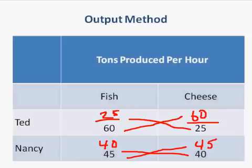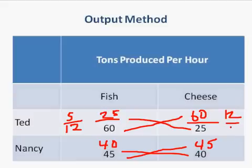What we're looking to do is find the opportunity cost. Once you get the numbers, we would want to simplify. 5 goes into 25 five times and 5 goes into 60 twelve times, so it's 5/12ths. This would be 12/5ths because it's typically a reciprocal.